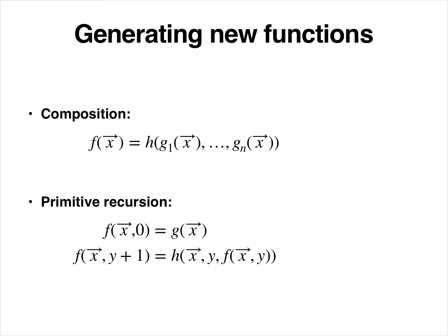The second scheme is perhaps less familiar and is called primitive recursion. We can build a new function from known functions g and h by fixing the base case with g, and then iterating the definition of f. For y+1, we use the recursion — the previous value of f, as well as x and y, and apply h to it, defining f at y+1. This may seem a strange way of writing a recursion, but we'll go over examples to clarify.